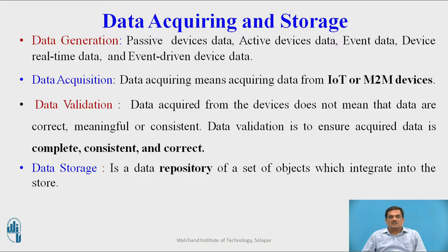Data generation is a process of generating data through passive devices, active devices, event data, or device real-time data. Depending upon the type of device, the generated data will be categorized as passive device data, active device data, event data, device real-time data, and event-driven device data. Once the data is generated, we have different types of data available. Then data is acquired — that means acquiring data from IoT or M2M devices.